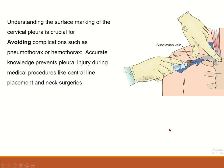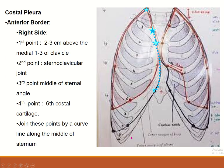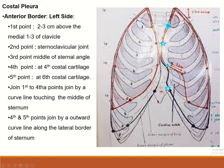The anterior border surface anatomy differs from right side to left side. On the right side: first point two to three centimeters above the medial one-third of the clavicle, second point at the sternoclavicular joint, third point at the middle of the sternal angle, fourth point at the sixth costal cartilage. Join this line by a curved line touching the middle of the sternum.